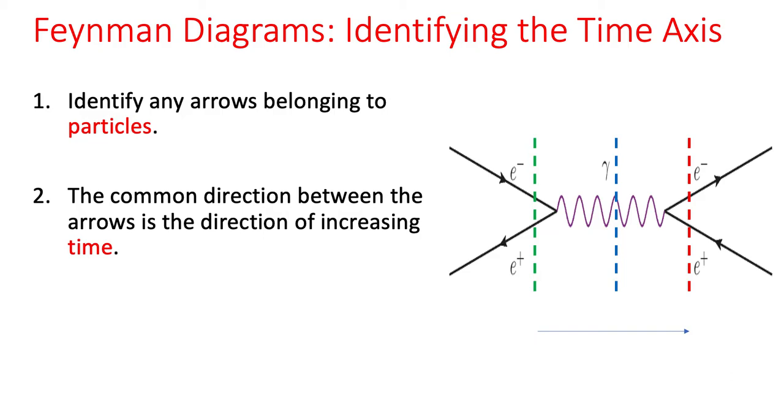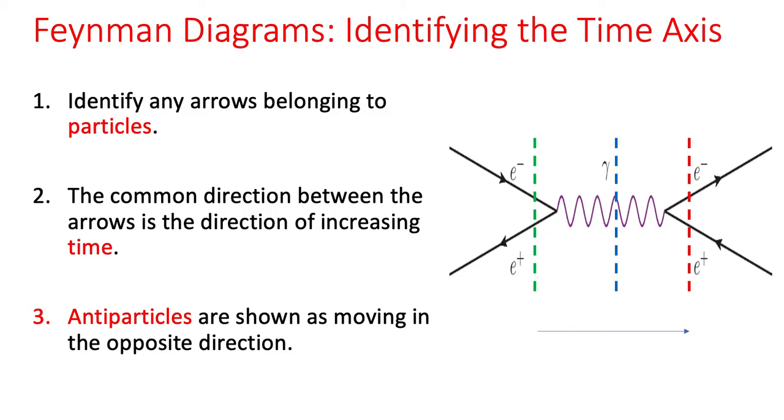So what we've got here is an electron and a positron existing. We've got a photon being created and then an electron and anti-electron pair. This is the bit I think is really troublesome. We could avoid this by changing the conventions, but conventions in physics are really important and we stick with them. The problem here is that antiparticles are shown as moving in the opposite direction to what they actually are.